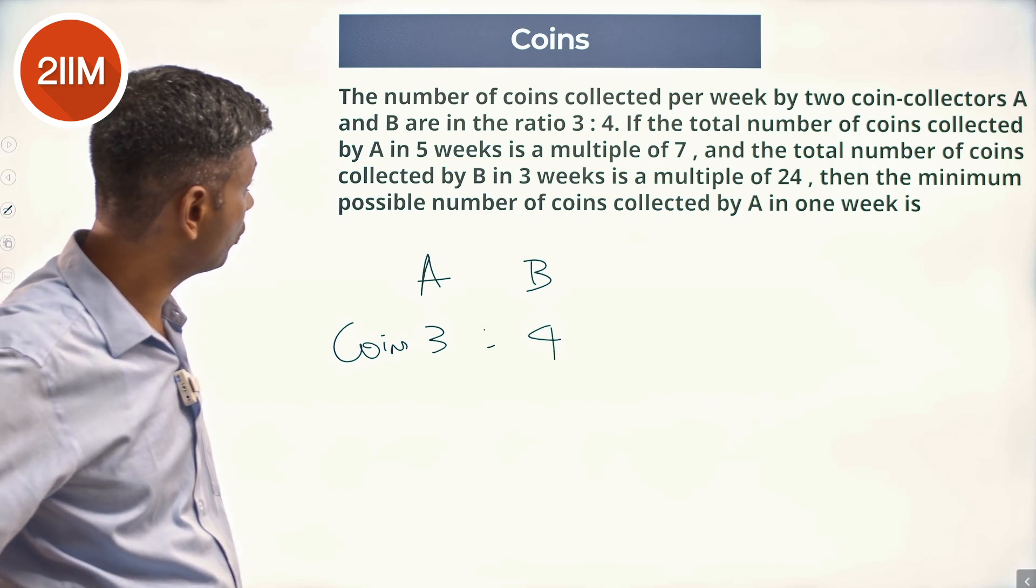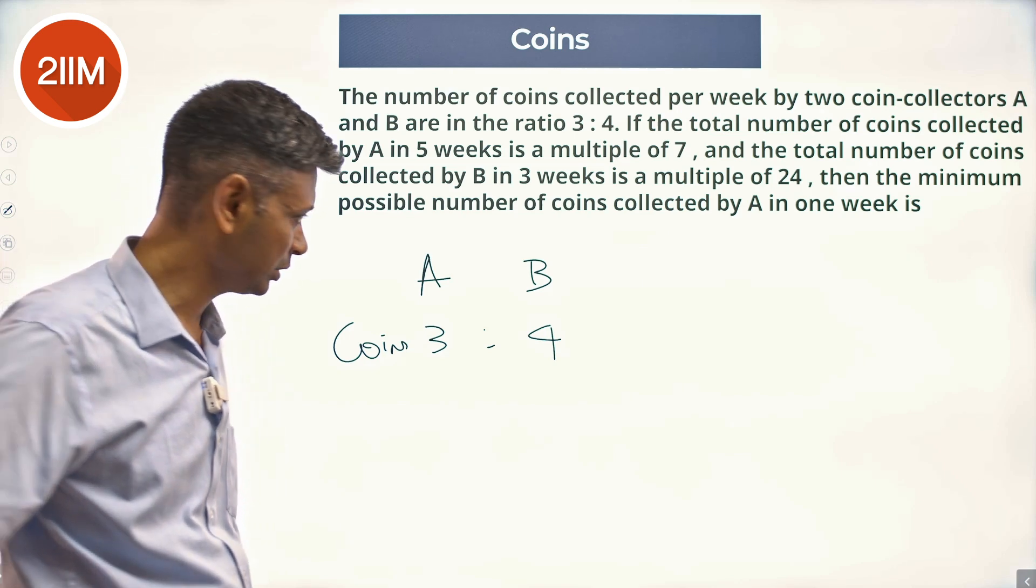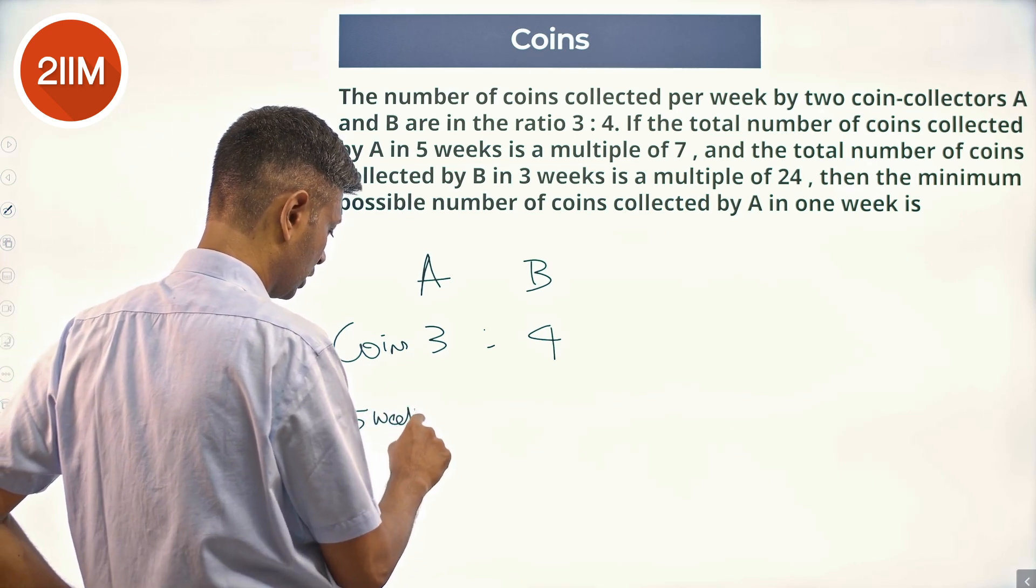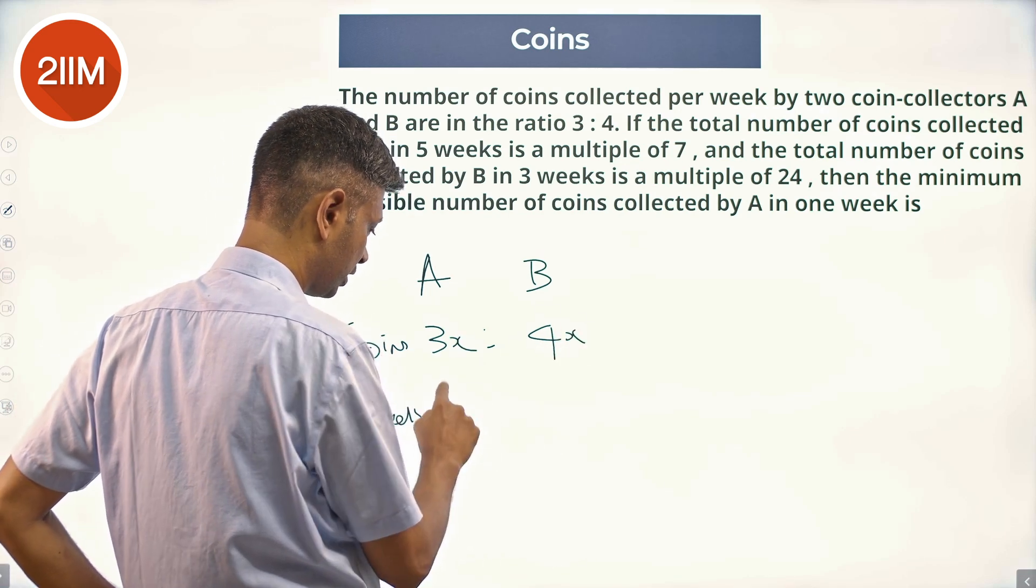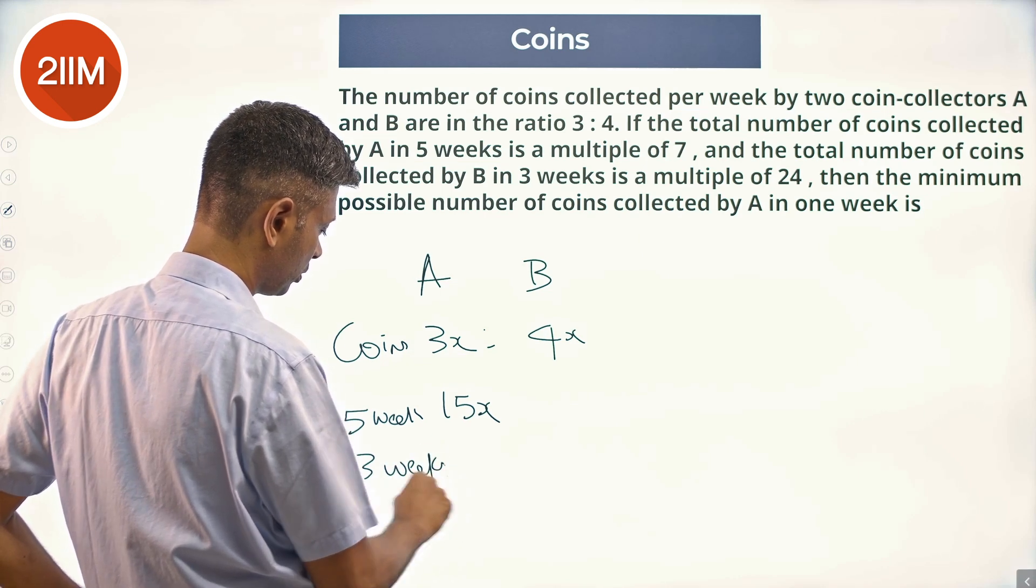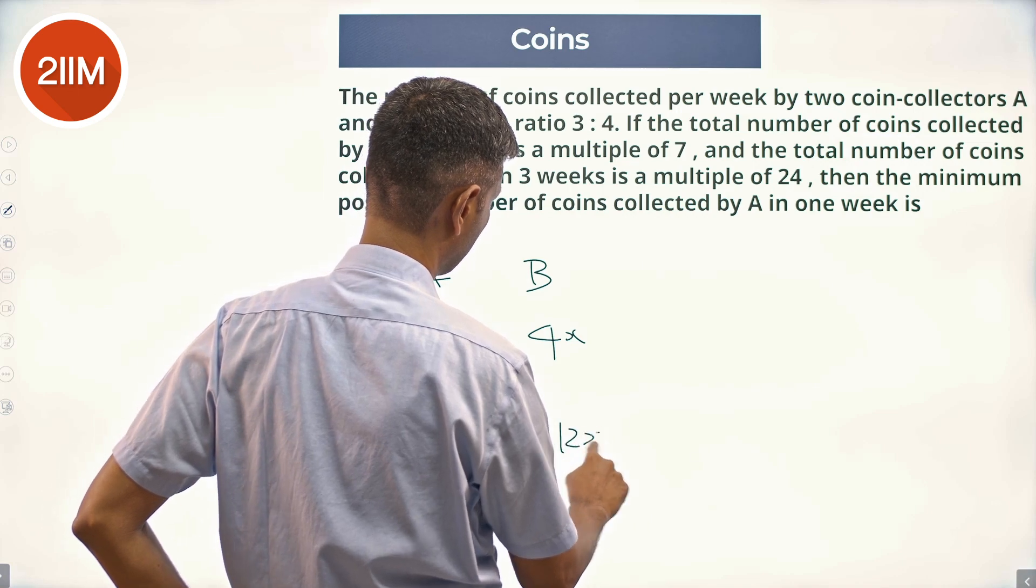Then the total number of coins collected by B in 3 weeks is a multiple of 24. So in 5 weeks, let us say this is 3x and 4x. We collect 15x and in 3 weeks the number collected is 4x into 3 which is 12x.